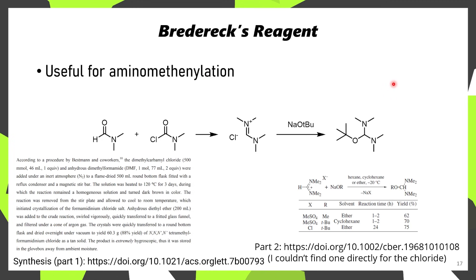The next reagent is Bredereck's reagent, a useful reagent for aminomethenylation—useful when synthesizing heterocycles, for instance. Its synthesis is quite straightforward: first, dimethylformamide is reacted with dimethylcarbamoyl chloride, forming a formamidinium salt. This is then reacted with alkoxides such as sodium tert-butoxide to prepare Bredereck's reagent or other orthoformate derivatives. In the EROS article they mention this can be done in ether, but requires 24 hours, whereas it takes only 1–2 hours when the corresponding methyl sulfate anion is present and cyclohexane is used as solvent.